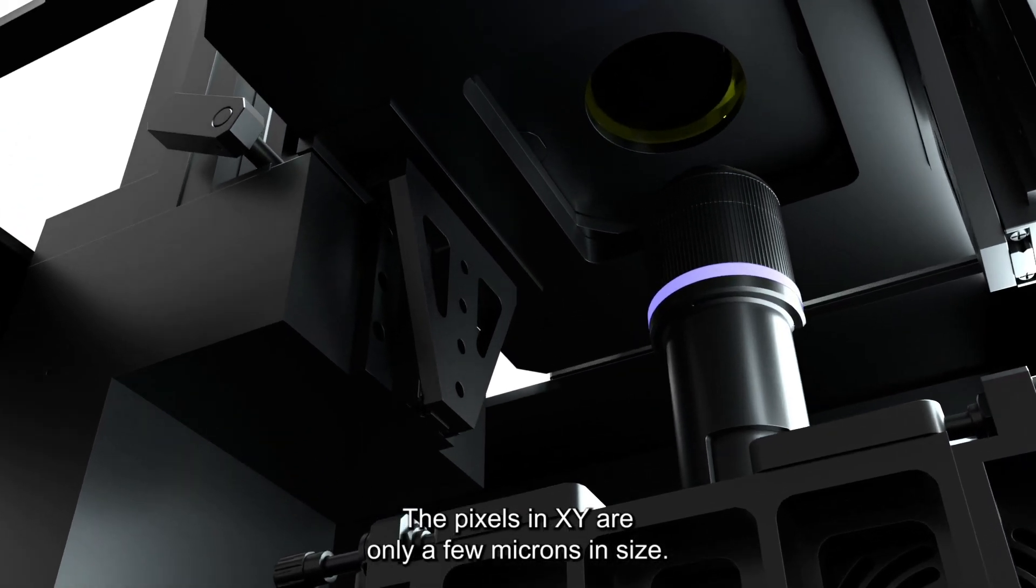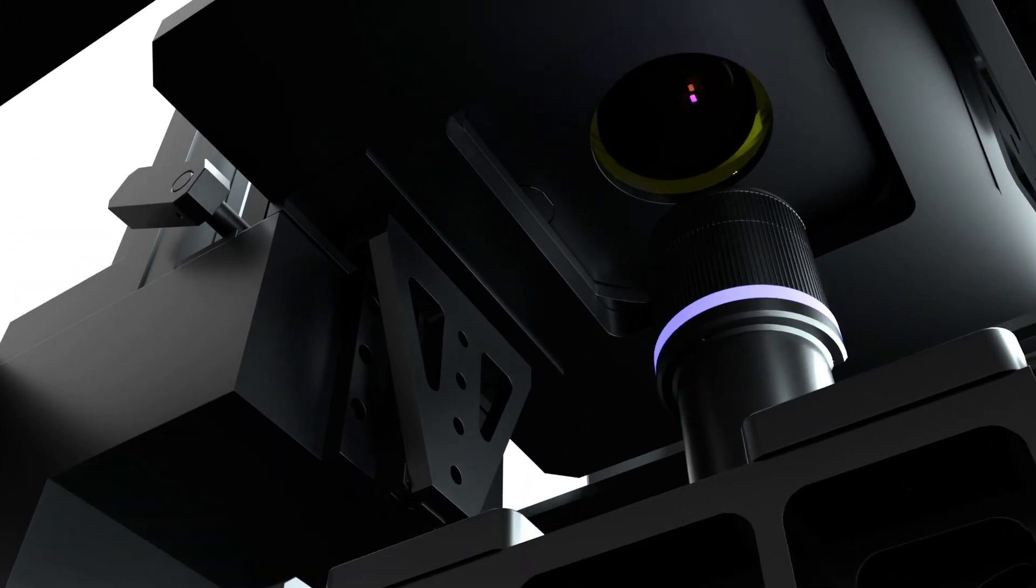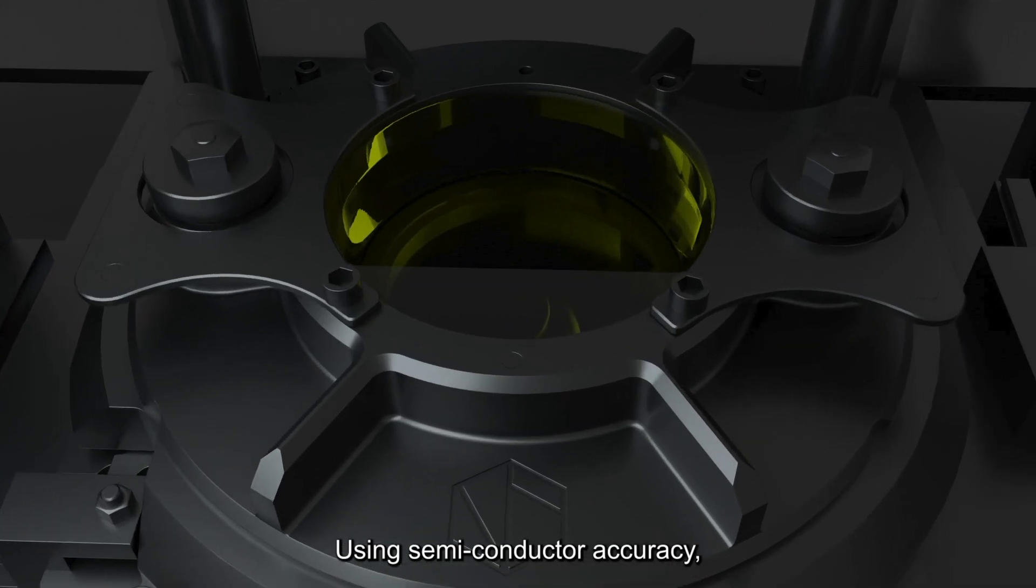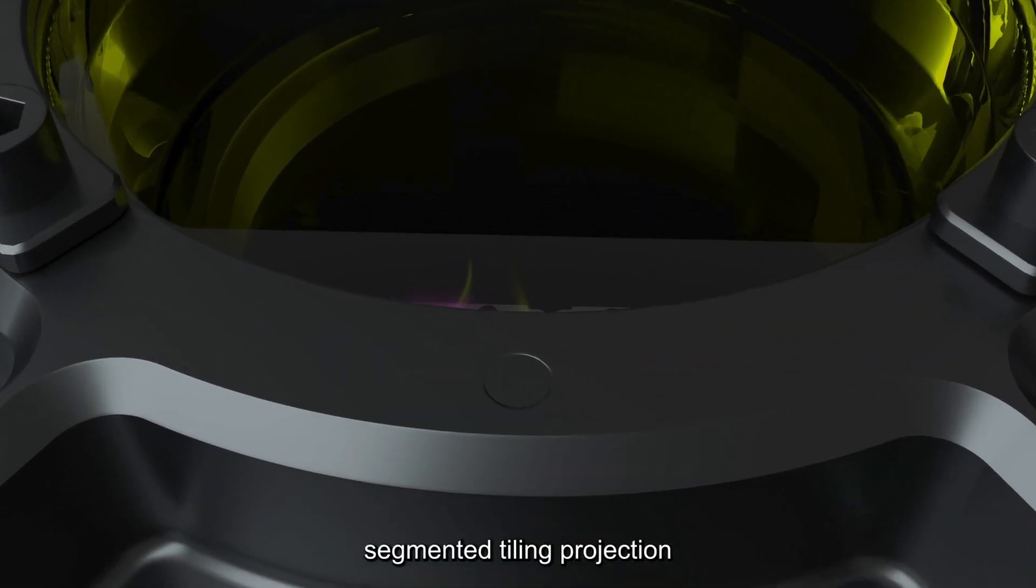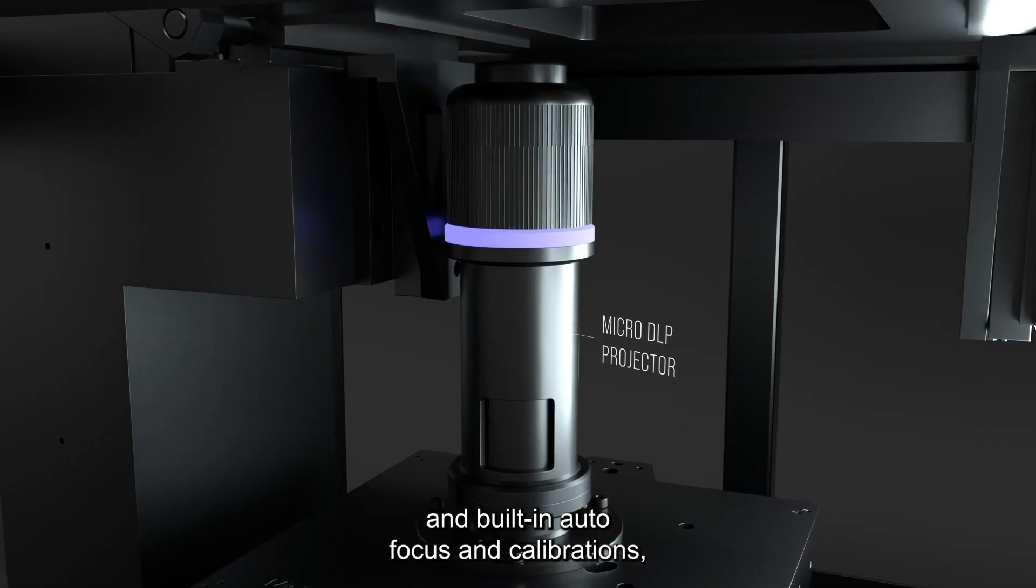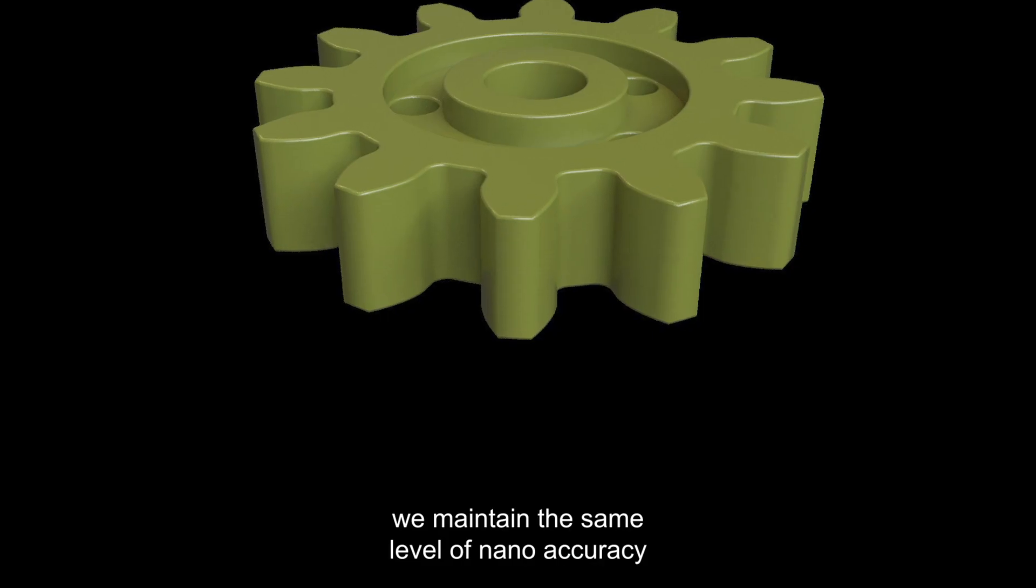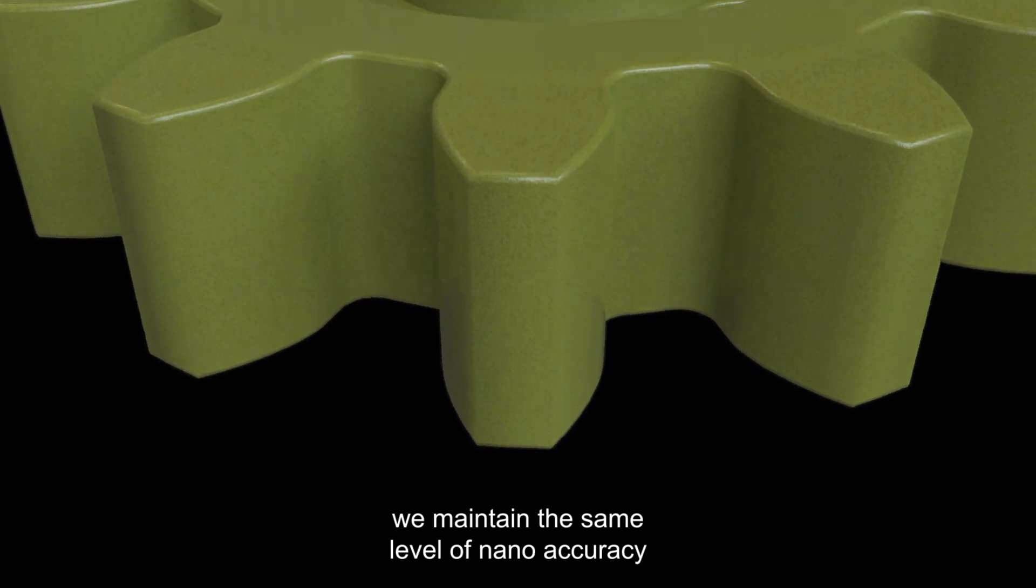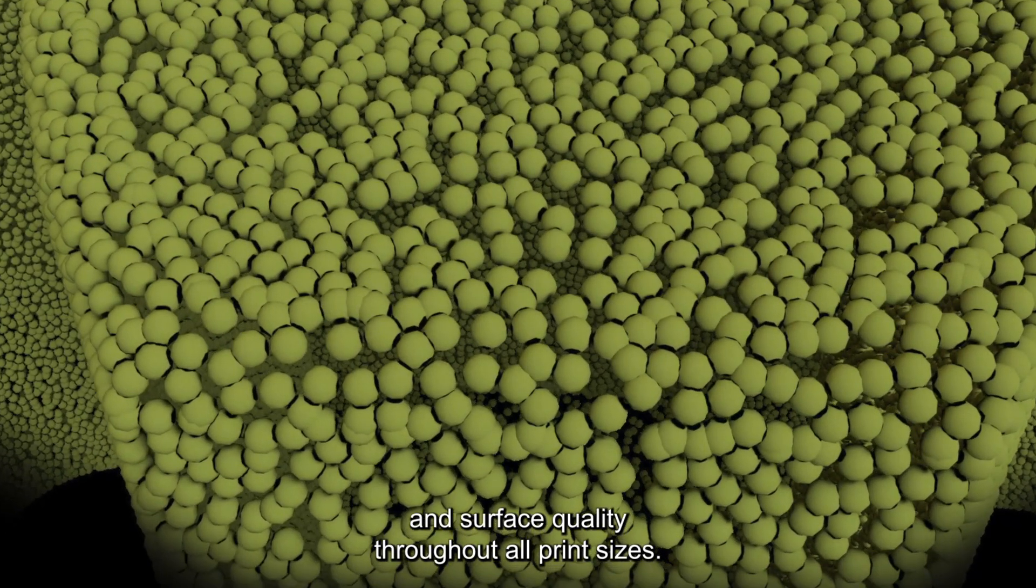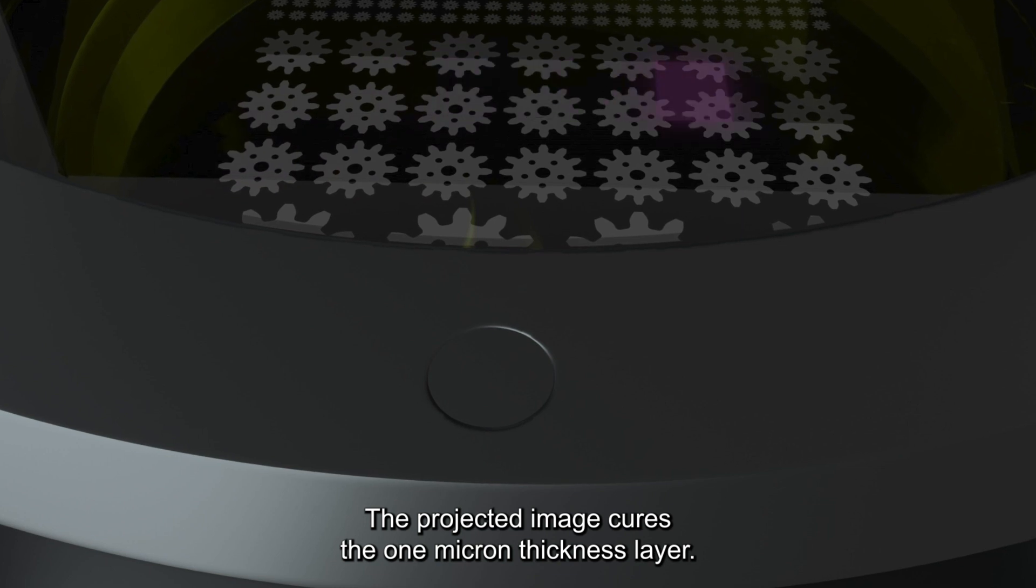The pixels in XY are 1 micron in size. Using semiconductor accuracy, segmented tiling projection, and built-in autofocus and calibrations, we maintain the same level of nano accuracy and surface quality throughout all print sizes. The projected image cures the 1 micron thickness layer.